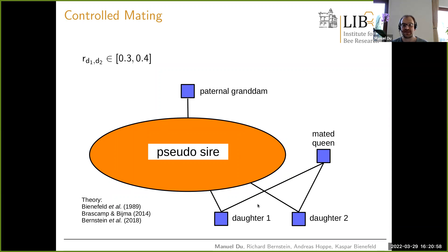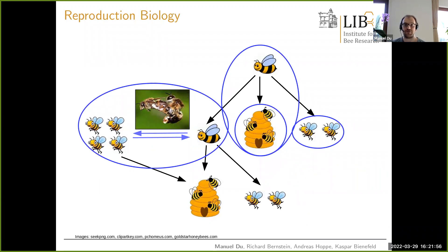The theory of honeybee pedigrees developed in several steps. In the late 1980s, Caspar Bienefeld introduced the pseudosire concept. The probabilistic method of calculating relationships goes back to Pim Birnaskamp and Peter Beimer in 2014. In 2018, Richard Bernstein wrote a program enabling fast calculation of all relationships in a population and the inverted relationship matrix, making the whole theory applicable for large honeybee populations. With this, all challenges of reproduction biology and its description in quantitative genetics terms are basically solved.